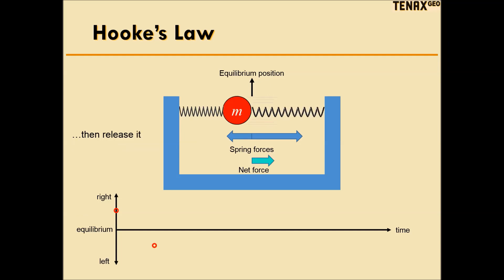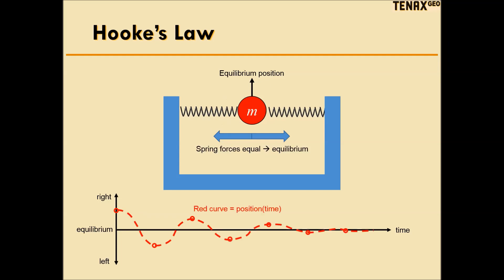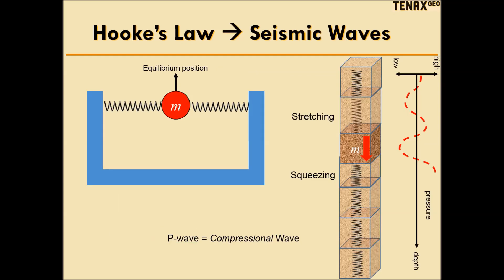When I release the mass, it will shoot to the left until it's stopped by the stretched right-hand spring, and then the mass will travel back to the right. Eventually the mass comes to rest because the spring loses potential energy to heat — if it didn't, the mass would oscillate forever. We can plot a red curve for the mass's position as a function of time, and also plot the velocity: the mass has maximum velocity when moving past the equilibrium point and zero velocity when stopped by the spring on either side.